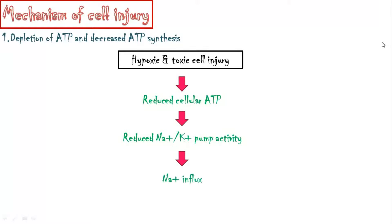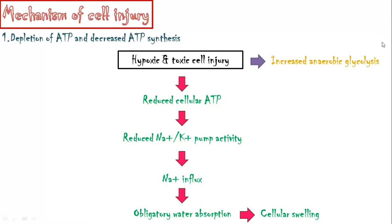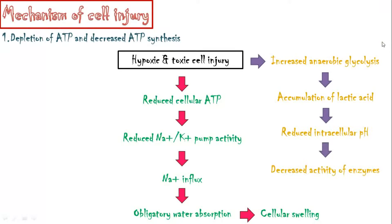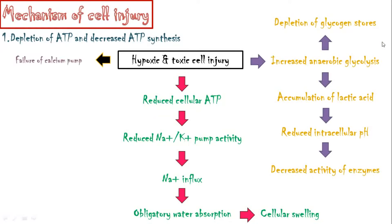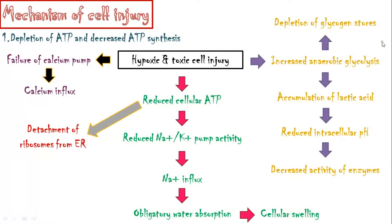The sodium-potassium pump is essential to maintain electrolyte balance between the cell and extracellular fluid. As pump activity reduces, sodium ions tend to diffuse rapidly into the cell. Water always follows sodium, so as sodium influx occurs, obligatory water absorption occurs, causing cellular swelling. Due to hypoxia, anaerobic glycolysis also increases, causing accumulation of lactic acid and reduction in intracellular pH, resulting in reduced enzymatic activity and depletion of glycogen stores. Reduced ATP also causes failure of calcium pumps, resulting in excessive calcium influx, ribosome detachment from the endoplasmic reticulum, and reduction in protein synthesis.